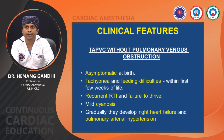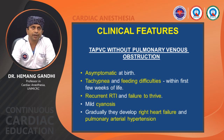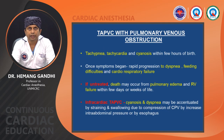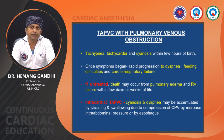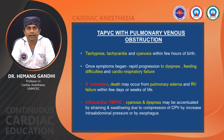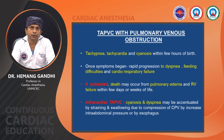Clinical features: without obstruction, patients remain asymptomatic at birth, then develop tachypnea and feeding difficulties within the first few weeks, with recurrent respiratory tract infections, failure to thrive, mild cyanosis, and gradually right heart failure and pulmonary arterial hypertension. With obstruction, patients develop tachycardia, tachypnea, and cyanosis within a few hours of birth, with rapid progression to dyspnea, feeding difficulties, and cardiorespiratory failure. Untreated obstructive TAPVC can cause death from pulmonary edema and RV failure within days or weeks. Intracardiac TAPVC may have cyanosis and dyspnea accentuated by straining and swallowing due to compression of the common pulmonary vein.